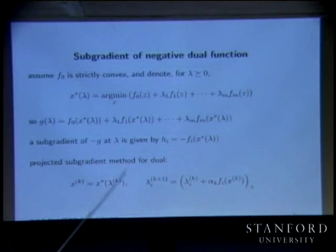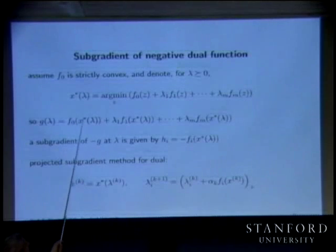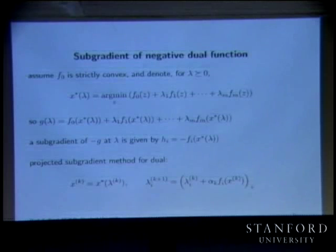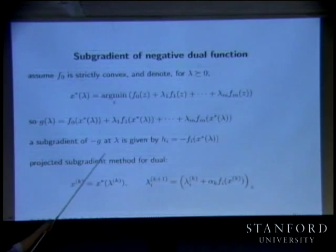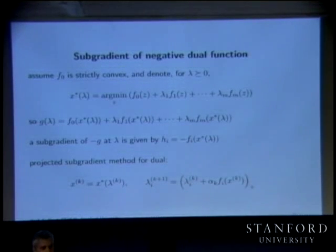If x star is the minimizer, then g of lambda is f0 of x star of lambda plus lambda_1 times the constraints — it's the Lagrangian evaluated at lambda star. A subgradient of minus g at lambda is then given by: h_i equals minus f_i of x star of lambda.